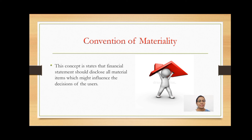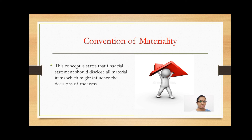The last convention is the Convention of Materiality. This concept states that the financial statement should disclose all material items which might influence the decision of users. Only those items should be disclosed in the financial statement which have a significant economic effect. For example, a significant fine incurred by an entity is disclosed separately in the financial statement and cannot just be grouped with general expenses, because an item material to one person may be immaterial to another person.